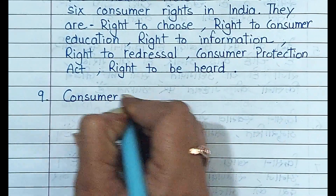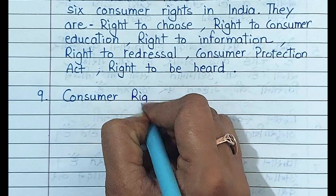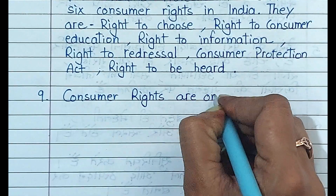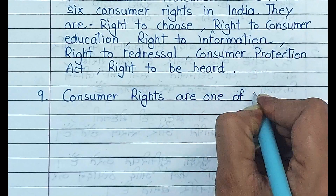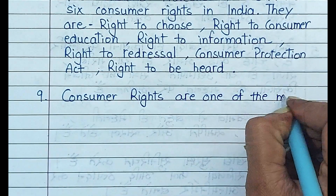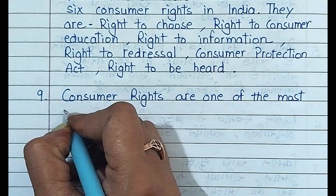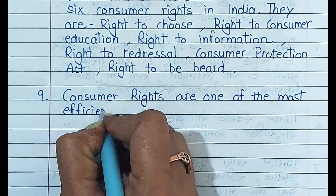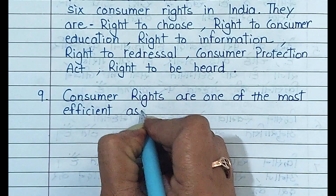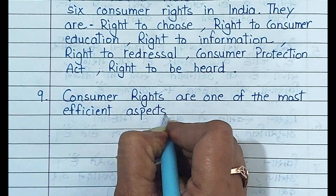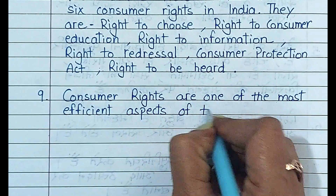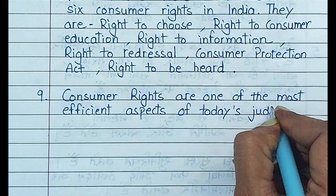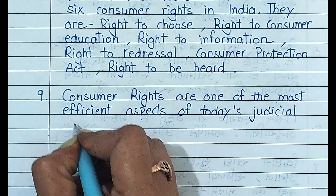Number 9. Consumer rights are one of the most efficient aspects of today's judicial system.